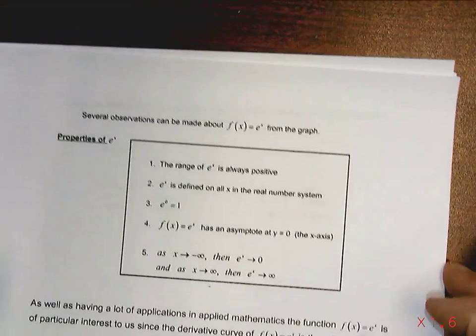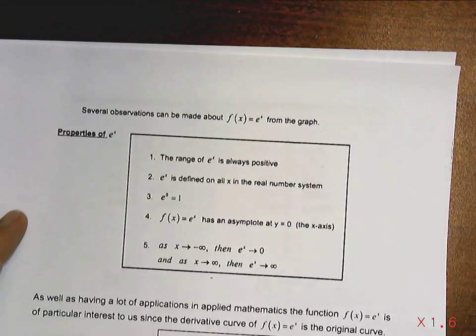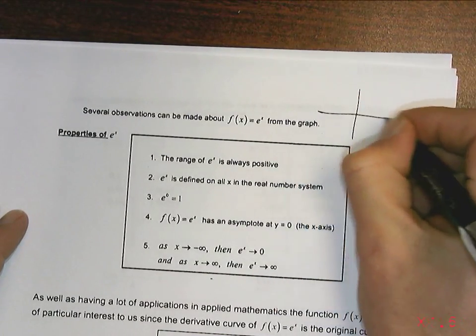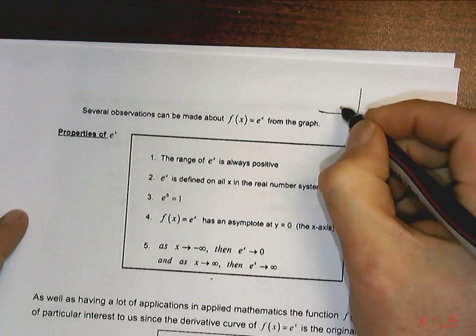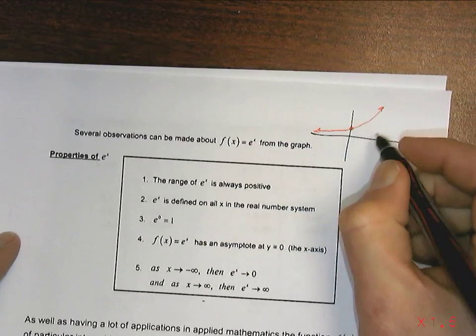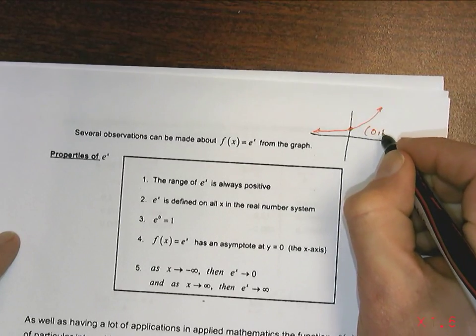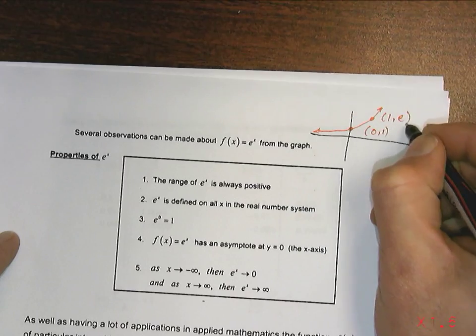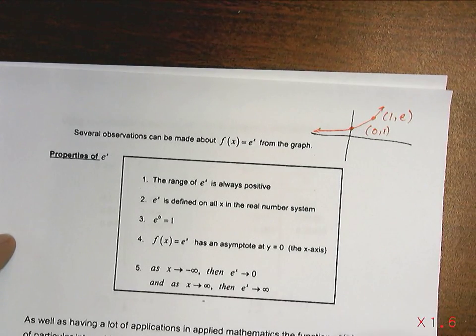We're going to look at some properties of e to the x. Notice that when we talk about e to the x, it looks like this. All exponential functions go through the point 0 comma 1 and it would go through the point 1 comma e or 2.718.